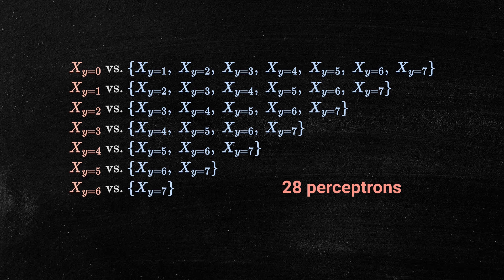This process, called the one versus one strategy, reduces multiclass classification to multiple binary classification problems.